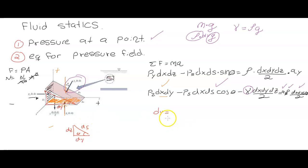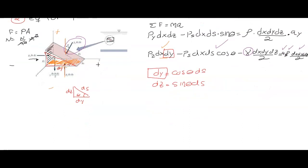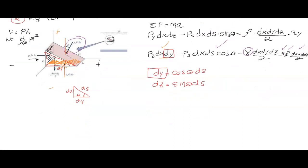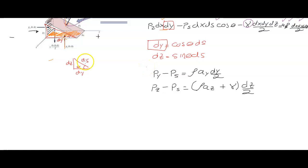We can express delta-y using the triangle geometry: sine equals opposite over hypotenuse, and cosine equals adjacent over hypotenuse. So cosine of theta times delta-s gives delta-z, and sine of theta times delta-s gives delta-y. After substituting, the algebra is a bit time-consuming, so I'll skip ahead to the result.